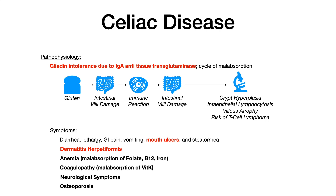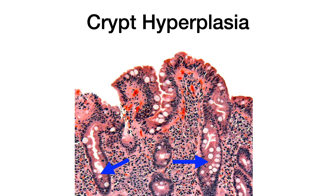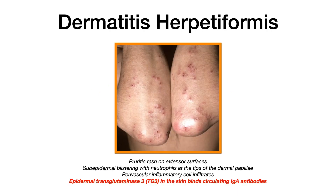Under a microscope, if the exam is going after histology, they'll show you crypt hyperplasia. But more often, if they show you an image pertaining to celiac disease, you're going to see dermatitis herpetiformis. It's classically described as a pruritic rash on the extensor surfaces — around the elbows and forearms. Histologically, you see subepidermal blistering with neutrophils at the tips of the dermal papillae with perivascular inflammatory cell infiltrates. Circulating IgA antibodies bind to epidermal transglutaminase 3 (Tg3) in the epithelium, creating an immune reaction on the extensor surfaces.